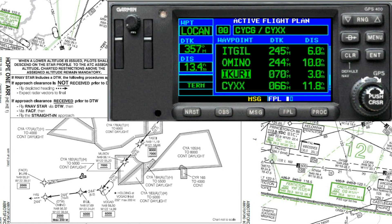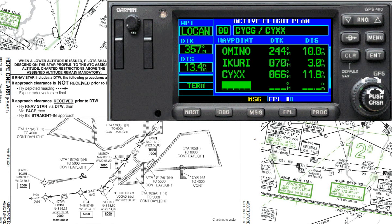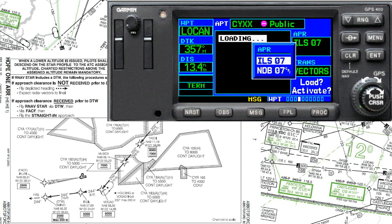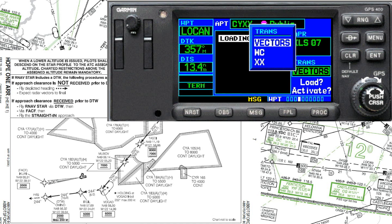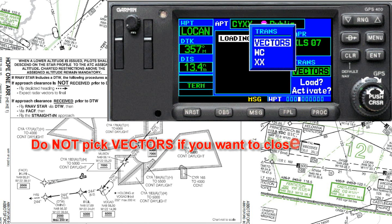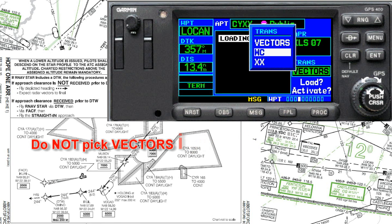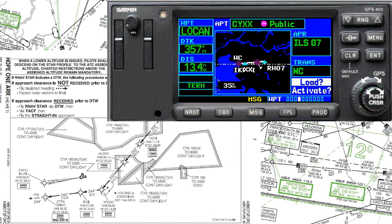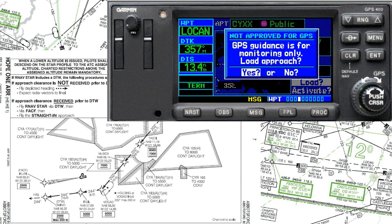We're here to learn how to close it. The first step is to insert the approach — hit the procedure button and select an approach. We get ILS 07 with three options. There is only one rule here: never pick the vectors option if you want to close the STAR. We can pick either of the other two options — White Rock or ABSR — they'll both work fine. I know from experience that picking White Rock is a little easier, so we go with White Rock and select Load.